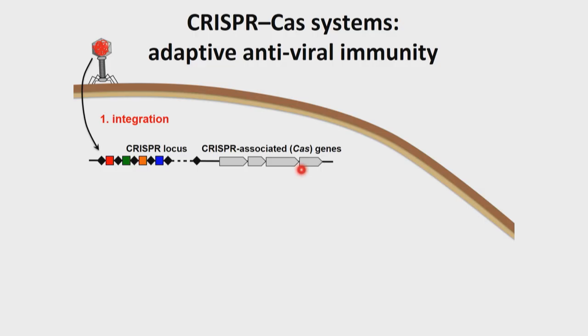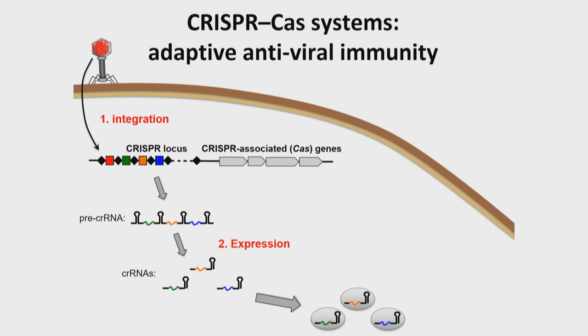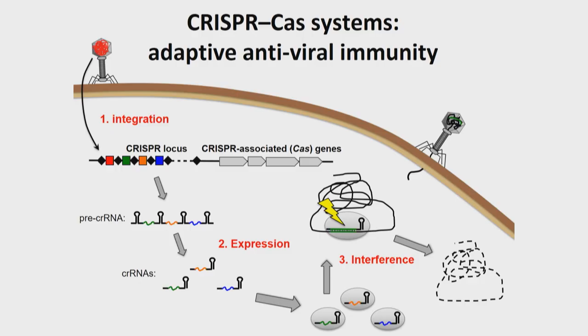The cell can then make a copy of that CRISPR sequence in the form of RNA — a transient copy of this genetic material that gets processed down to shorter bits of RNA, each including a sequence derived from a virus. Those RNA molecules, called CRISPR RNAs, are recognized by proteins encoded by CRISPR-associated or Cas genes. Together, these protein-RNA complexes can survey the cell looking for places in a DNA molecule that match the sequence in the CRISPR RNA, and once that match is found, the proteins can cut up those DNA molecules and lead to their destruction.